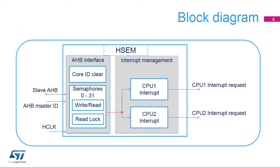The HSEM module is located on the AHB bus. It consists of an AHB interface containing the semaphores and an interrupt management block handling the interrupt distribution. A dedicated interrupt is provided for each CPU. Each CPU has its own enable, status, mask, and clear register for the semaphores. Each semaphore consists of two registers: a write-read register used to write-lock the semaphore in the two-step procedure and read back the semaphore's status. The write-read register is also used to free a semaphore. The read-lock register is used to read-lock the semaphore in the one-step procedure. The AHB bus master ID is used to identify which CPU is accessing the semaphore.